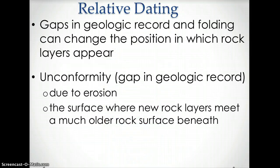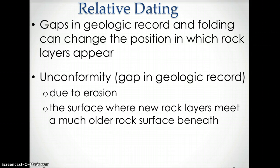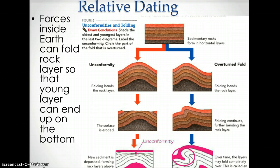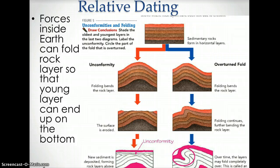Gaps in the geologic record and folding can change the position in which rock layers appear. An unconformity is a gap in the geologic record of rocks, caused by erosion. Erosion will cause the surface of new rocks to meet up with much older rock surfaces, which can be misleading because it will be difficult to date the rocks with certain layers missing. Forces inside Earth can fold rock layers so that a younger layer can end up on the bottom, also leading to issues with relative dating.